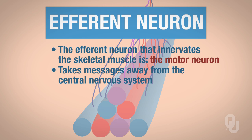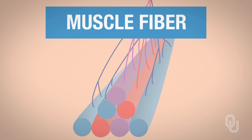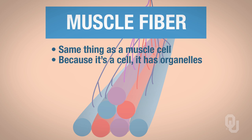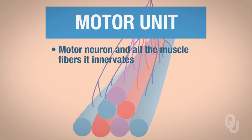A few other items you need to be familiar with: a muscle fiber is the same thing as a muscle cell. Muscle cells are cylindrical in shape, so when you see the term muscle fiber, do not let that confuse you — it's just a cell, and because it's a cell it has organelles. Next is the motor unit. When you hear the term motor unit, you need to think of a motor neuron and all the muscle fibers it innervates.